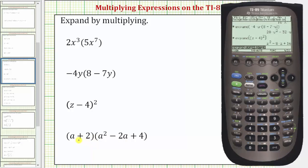For our last example, notice how we have the quantity a plus two times the quantity a squared minus two a plus four. So we'll press F2 for the algebra menu, option three for expand. We'll begin with an open parenthesis. And now to use the variable a, notice how the a is located above the equal sign. So we press alpha equal sign for the a, and then we have plus two, close parenthesis, open parenthesis,